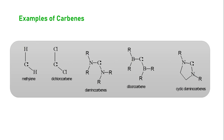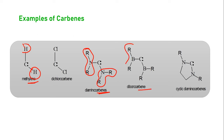Here are some examples of carbenes. Methylene is the simplest, with both groups being hydrogen atoms. Dichlorocarbene has 2 chlorine atoms. Diaminocarbene has 2 amino groups (NR2) on both sides. Diborocarbene has BR2 on both sides. And cyclic diaminocarbene is analogous to diaminocarbene, but the two nitrogen-containing parts are joined in a ring — making it cyclic.